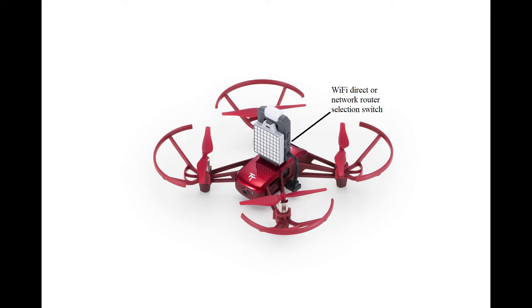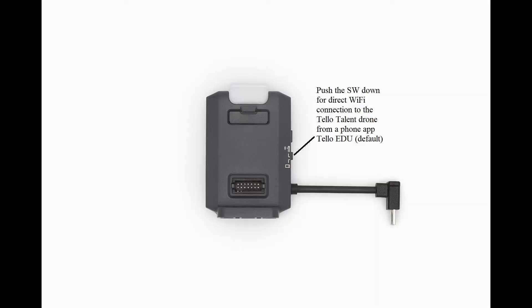The RoboMaster TelloTalent drone comes with an expansion LED, sensor, and high-speed Wi-Fi module. There is a Wi-Fi direct or network router selection switch. Push this switch down to select direct connection mode for use with the mobile app.